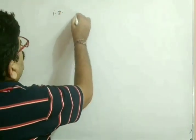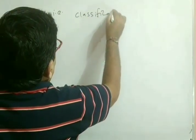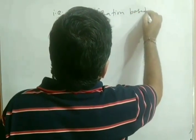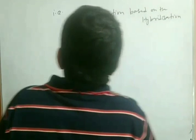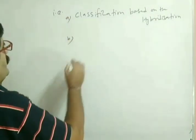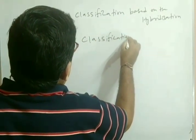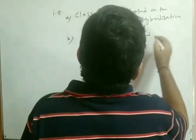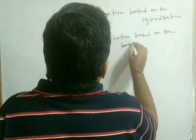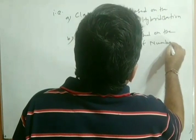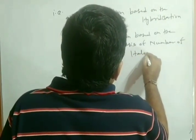Our next topic in this lesson is: two types of classifications are possible for halogen compounds. The first classification is based on hybridization, and the second one is classification based on the number of halogen atoms. Five types of halides can form on the basis of hybridization.